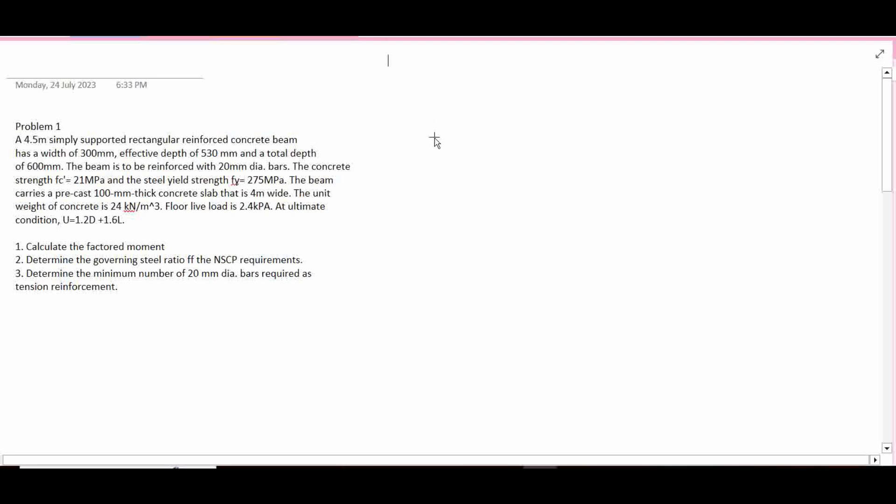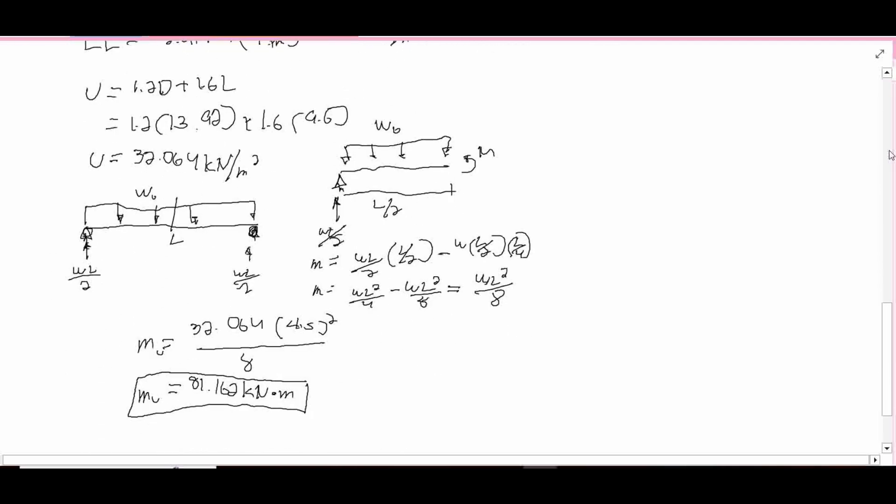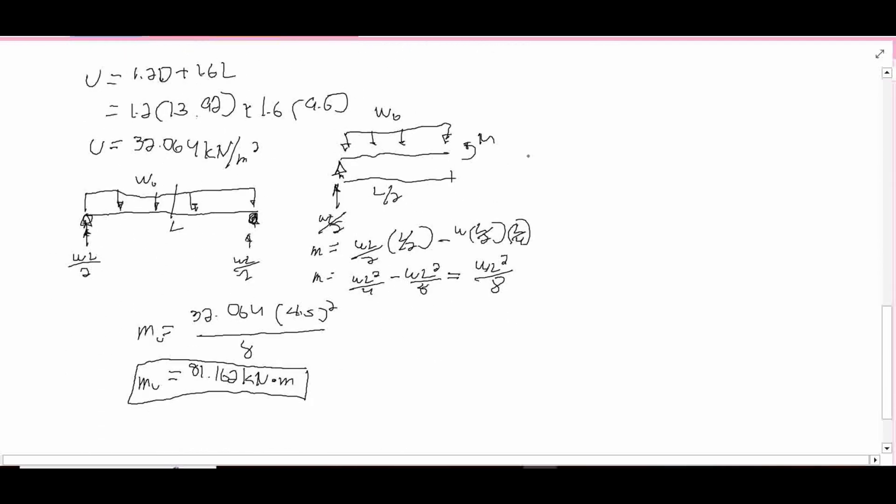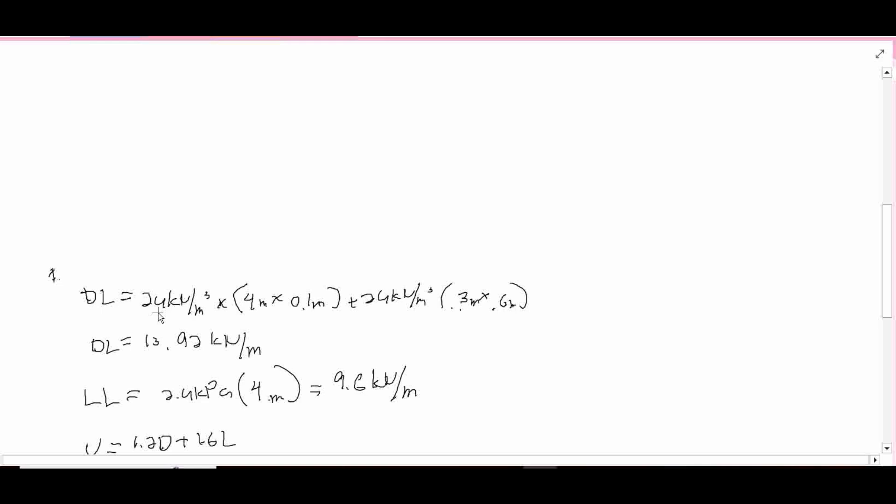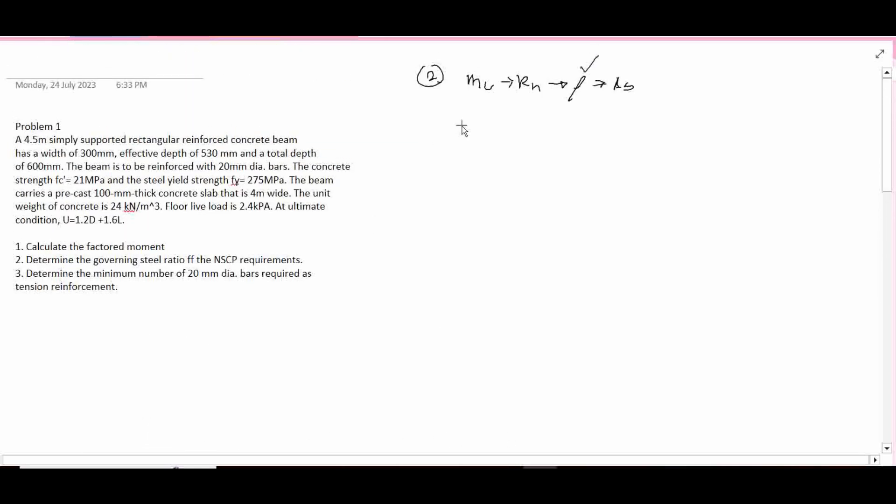To determine the governing steel ratio of the NSCP, number 2, governing. In order to solve for the steel ratio, we will use this pattern, which is we have the MU, next is get the RN, when you get the RN you can solve for RO, then when you get the RO you will solve for the ES. So we can stop here but to check the minimum steel ratio requirement.